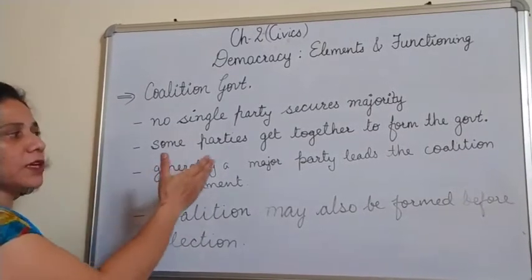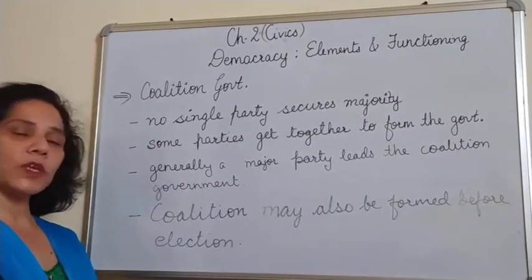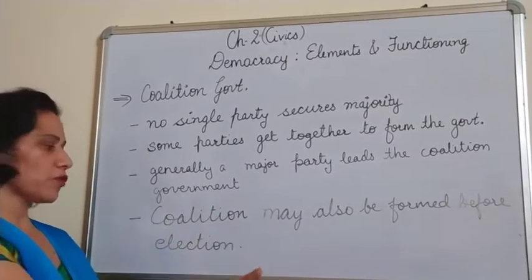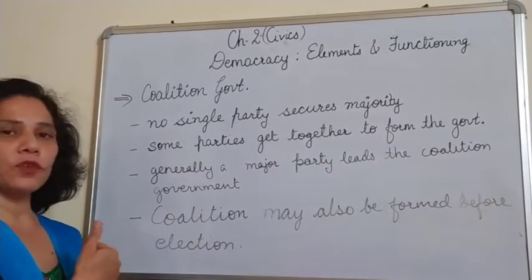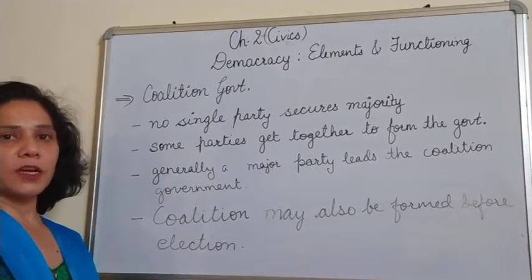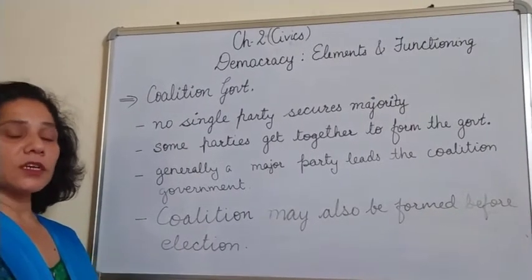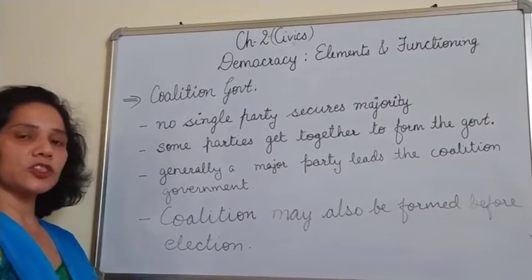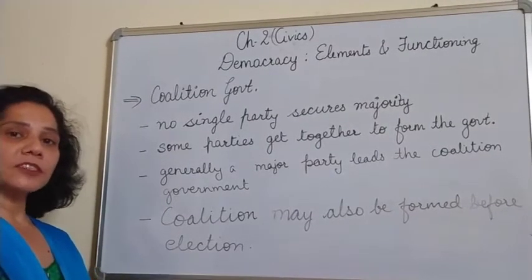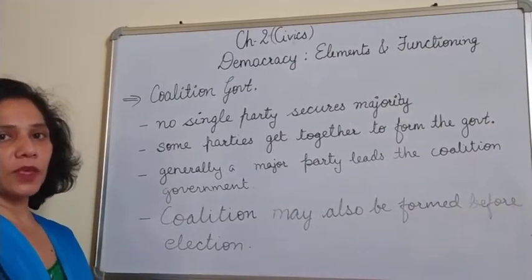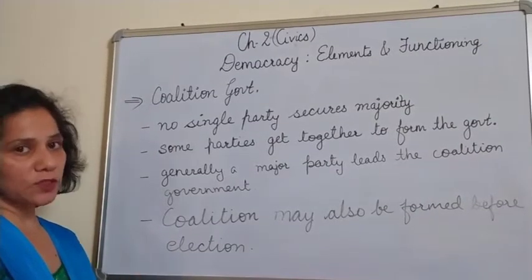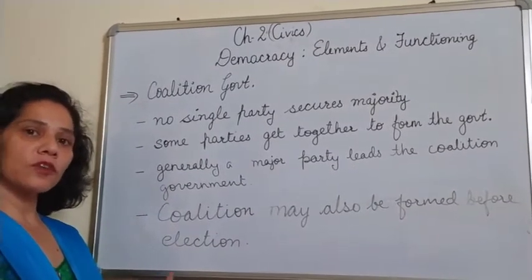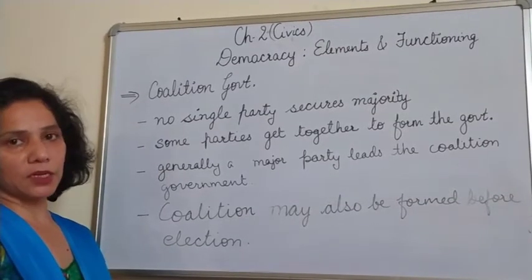Generally, a major party leads the coalition government. A coalition may also be formed before the election — some parties may form alliances before the election and fight the election together. Whichever party secures majority forms the government along with the coalition partners.